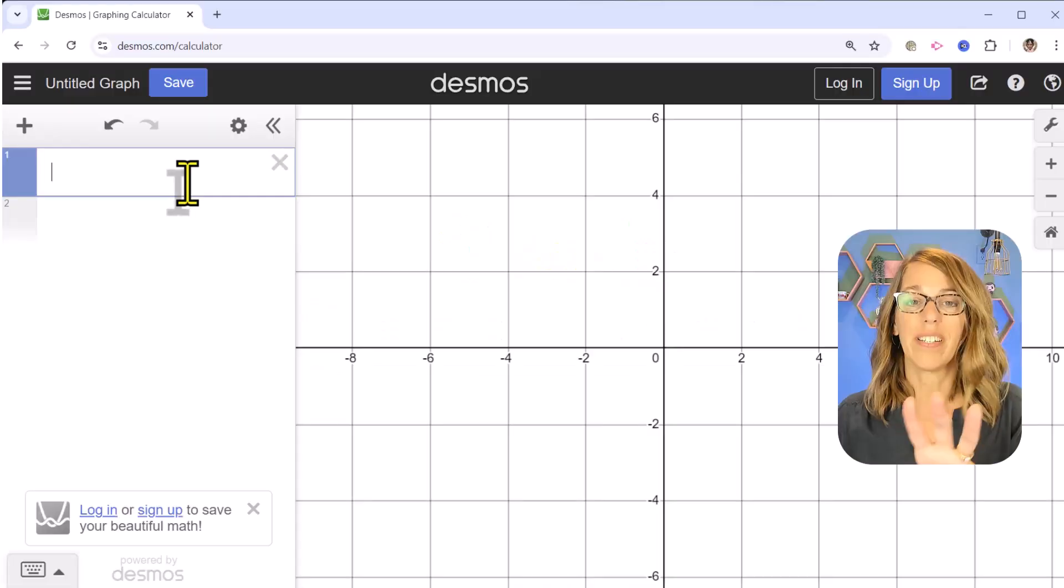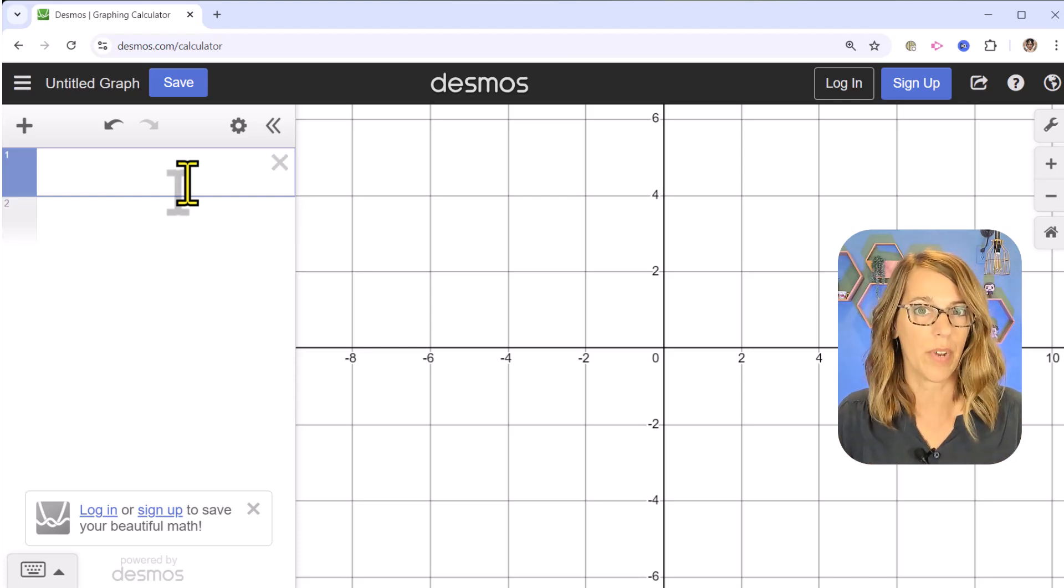I'm going to start here just in my default Desmos viewing screen and I want to graph a polar graph, just like a circle. So I'm going to do a circle with radius 4, so R is equal to 4.